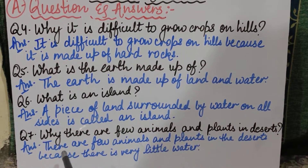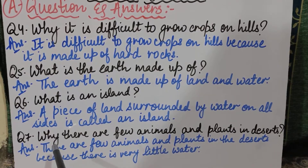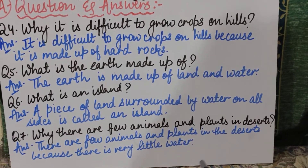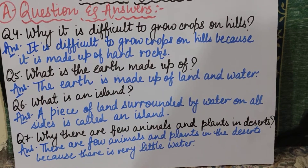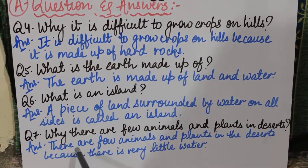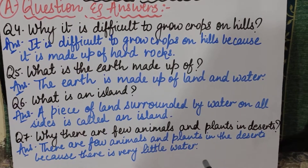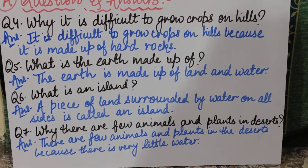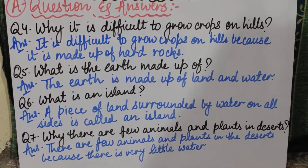Coming to the seventh question, which is the last question for today's revision: Why are there few animals and plants in deserts? The answer is: There are few animals and plants in the desert because there is very little water. That is why animals and plants are very few in the desert. Is that clear?